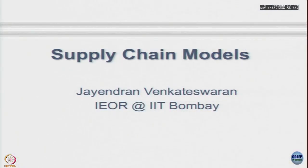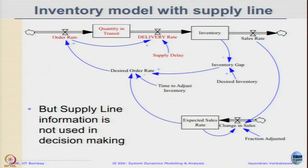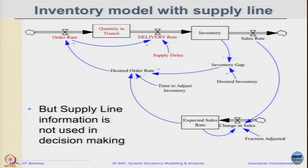In today's class we started looking at a basic inventory model and then slowly started to include the supply line aspect of it, as shown in this stock-flow diagram. We found that this is causing unnecessary oscillations within the system because the supply line information was not used in the decision making of computing the desired order rate. Today's class we will further expand on that and include different aspects in the decision making and move towards the supply chain models.